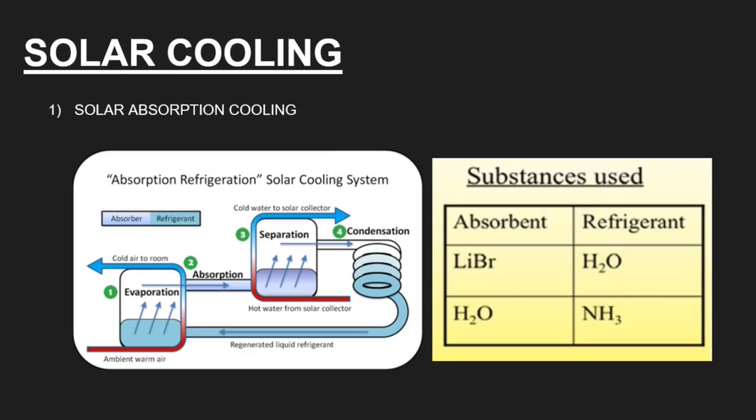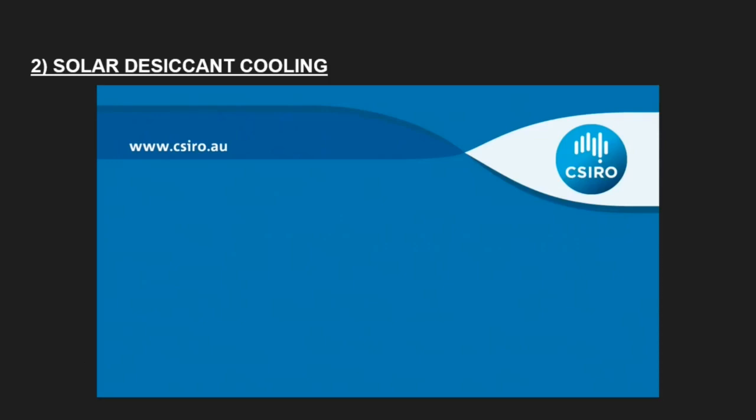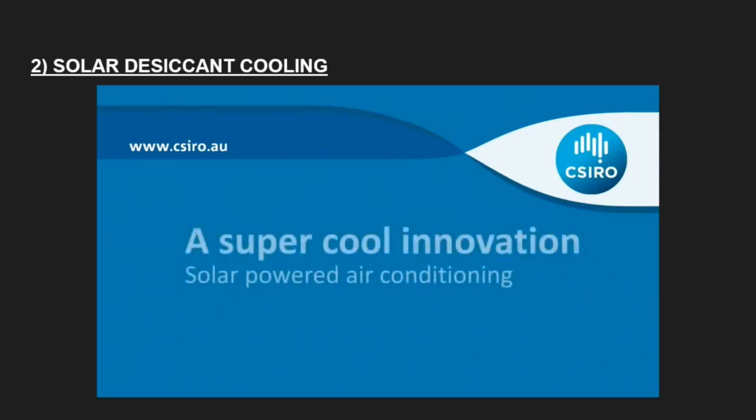Talking about the substances used, we have lithium bromide (LiBr) used as absorbent, and water can be used as absorbent. For refrigerant, H2O is used, then ammonia (NH3) is again very commonly used as refrigerant. The second mechanism of solar cooling is solar desiccant cooling.